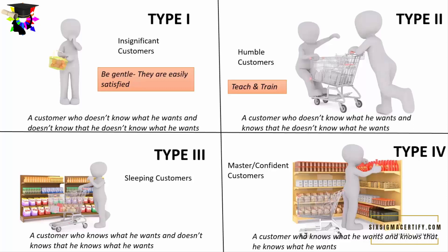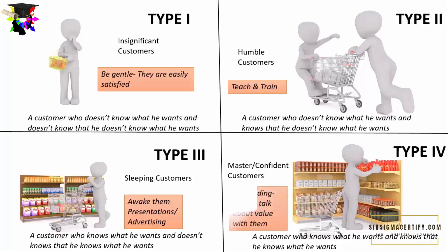To deal with Type 3 or sleeping customers, we have to awaken them with different types of advertisements and presentations. We should understand that Type 3 and Type 4 customers are very high in number — generally Type 4 customers are highest in number. Type 4 customers are demanding and always talk about value, so we should always talk about real value. If we can provide or improve the value that products or services bring into their lives, these customers will be willing to purchase.